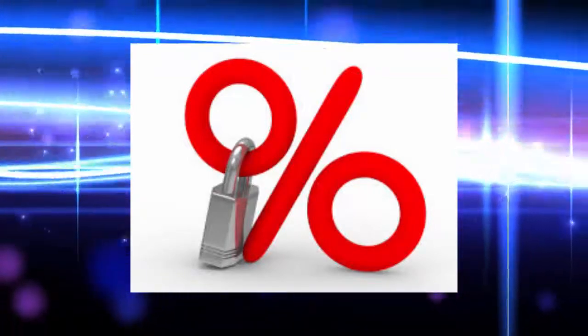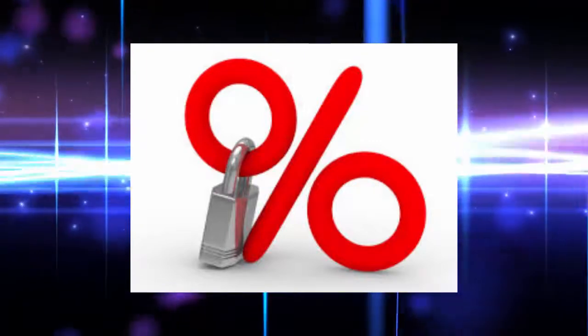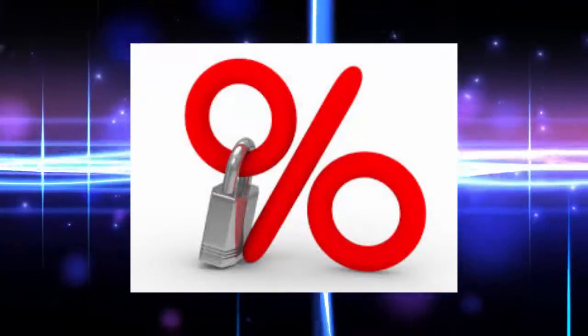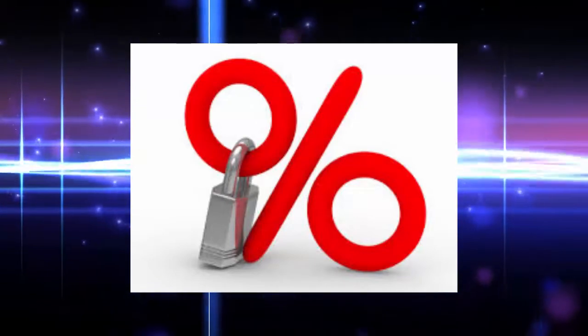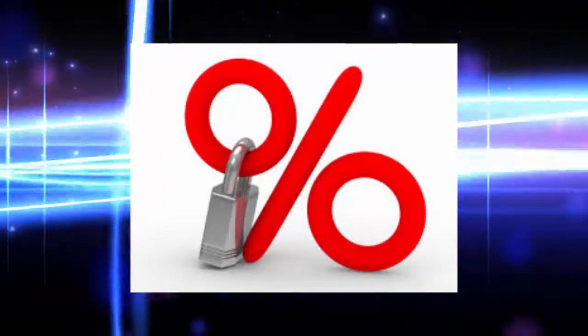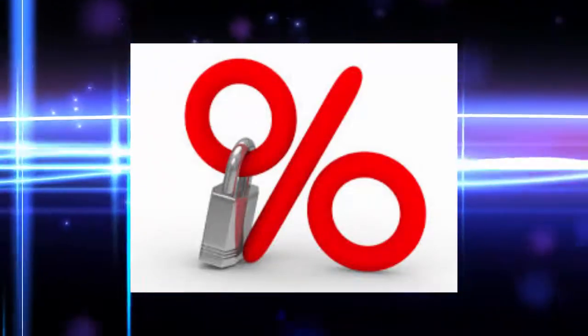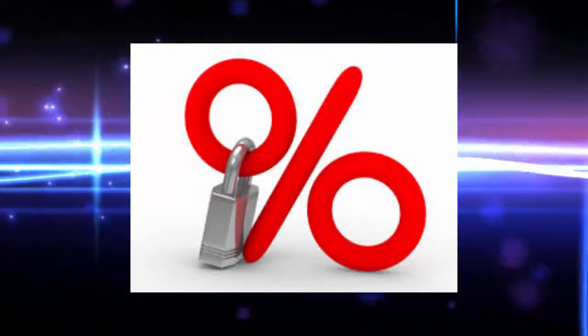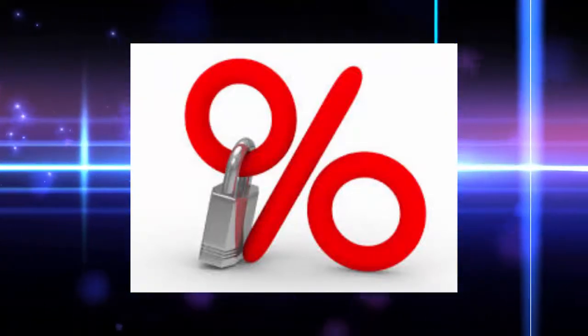On the off chance that a seismic tremor strikes, your protection will, in the event, help you remake your home, accepting you have quake protection. Be that as it may, shouldn't something be said about all the cost you will incur meanwhile? Imagine a scenario in which another crisis comes up in the meantime. With a mortgage, the bank bears the lion's offer of the danger to your home and, if fiasco strikes, you can live with cash in the bank. Life is full of stormy days, from separation to sickness and employment misfortune, and each one of them is immoderate.